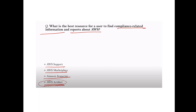Question: What is the best resource for a user to find compliance-related information and reports about AWS? Answer: AWS Artifact — whenever you see compliance-related information, go through AWS Artifact.